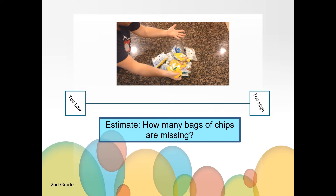An unreasonable low estimate would be that two bags of chips are missing. It is unreasonable because you may not easily notice if two bags of chips were missing. What would be a too low estimate? To make a reasonable high estimate, think about a time you have had a big bag of chips like this. Usually there are about 20 to 36 bags in all. An unreasonable high estimate is that 30 bags are missing because we can see so many and usually there aren't more than 36 bags in all. What would be a too high estimate? Now that you've thought of your too low and too high estimate, what is your estimate of the number of bags that is missing from the bigger bag? Go ahead and write it down on your piece of paper.